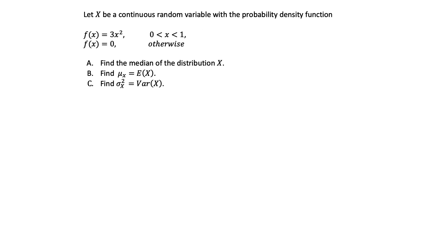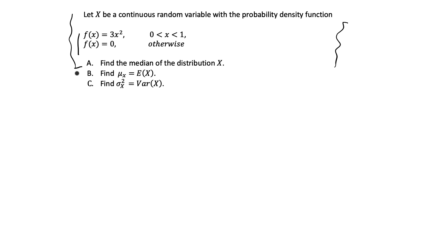Hey everyone! In this video, I'm going to do this statistics and probability problem. It says, let x be a continuous random variable with the probability density function. We're given the PDF where f of x is equal to 3x squared between the values of 0 and 1, and 0 otherwise. We're asked to find the median, the mean, and the variance of the probability distribution.